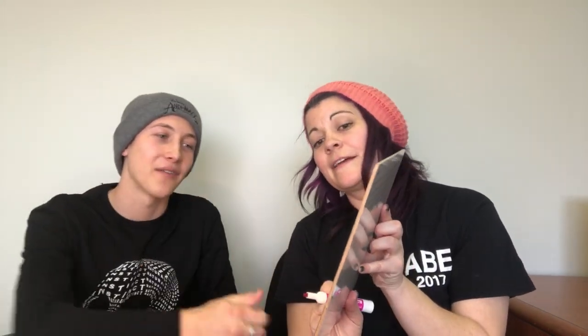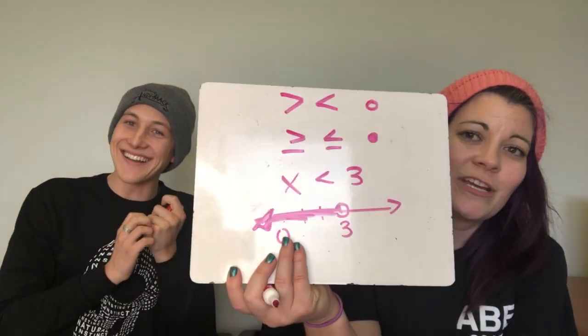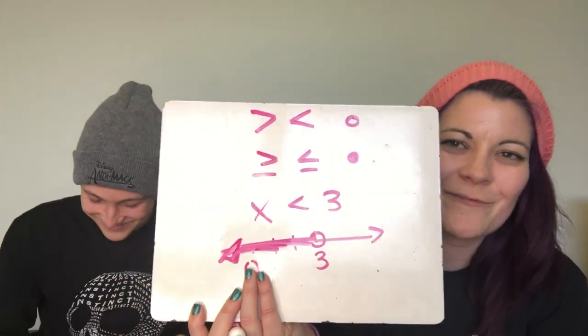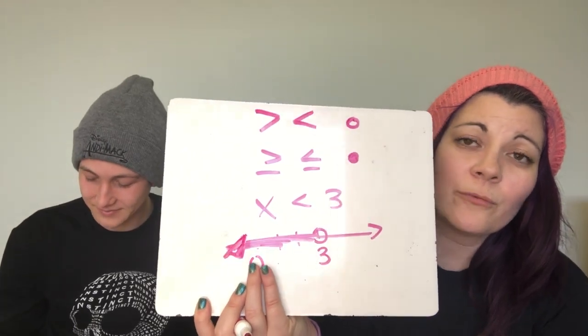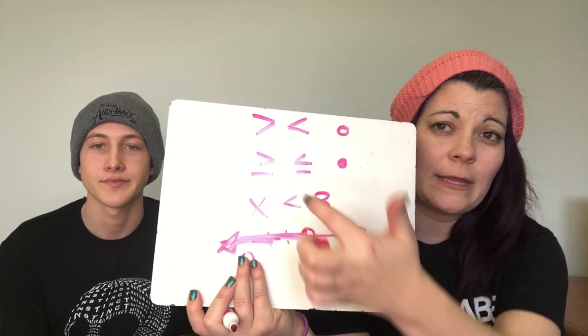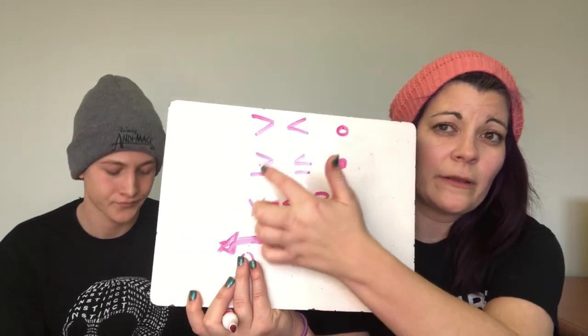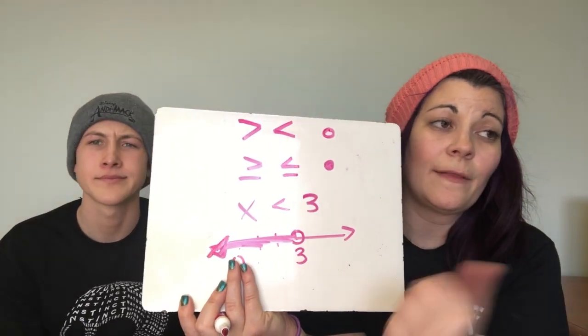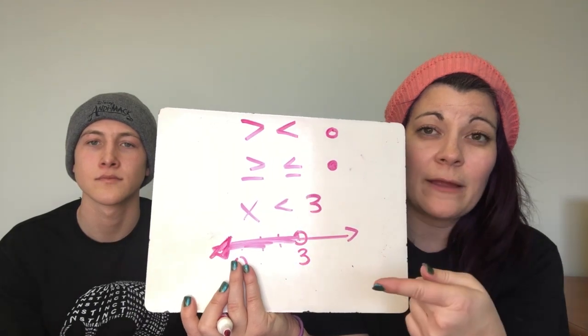The open circle means you can't actually have the value of 3. So to review: open circle for greater than or less than, closed circle for greater than or equal to or less than or equal to, shade to the left for less than, shade to the right for greater than.